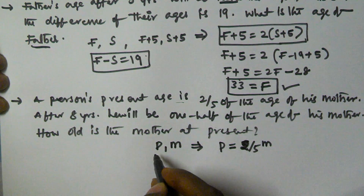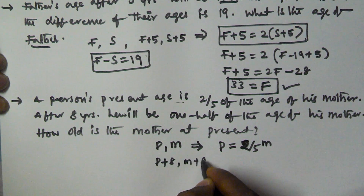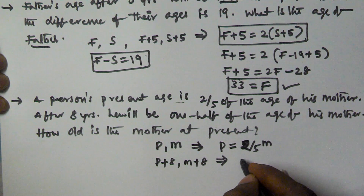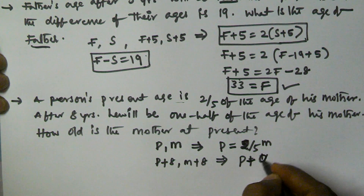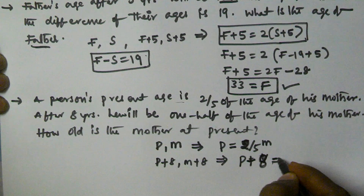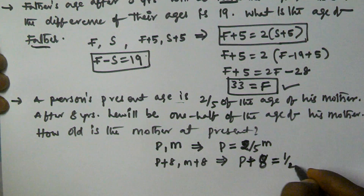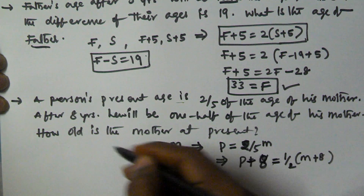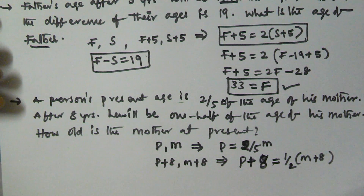After 8 years, their ages are going to be p plus 8 and m plus 8. After 8 years he will be half of his mother's age, so p plus 8 is equal to 1 by 2 of m plus 8. We have to substitute the value for p in this equation, where p equals 2 by 5 of m.